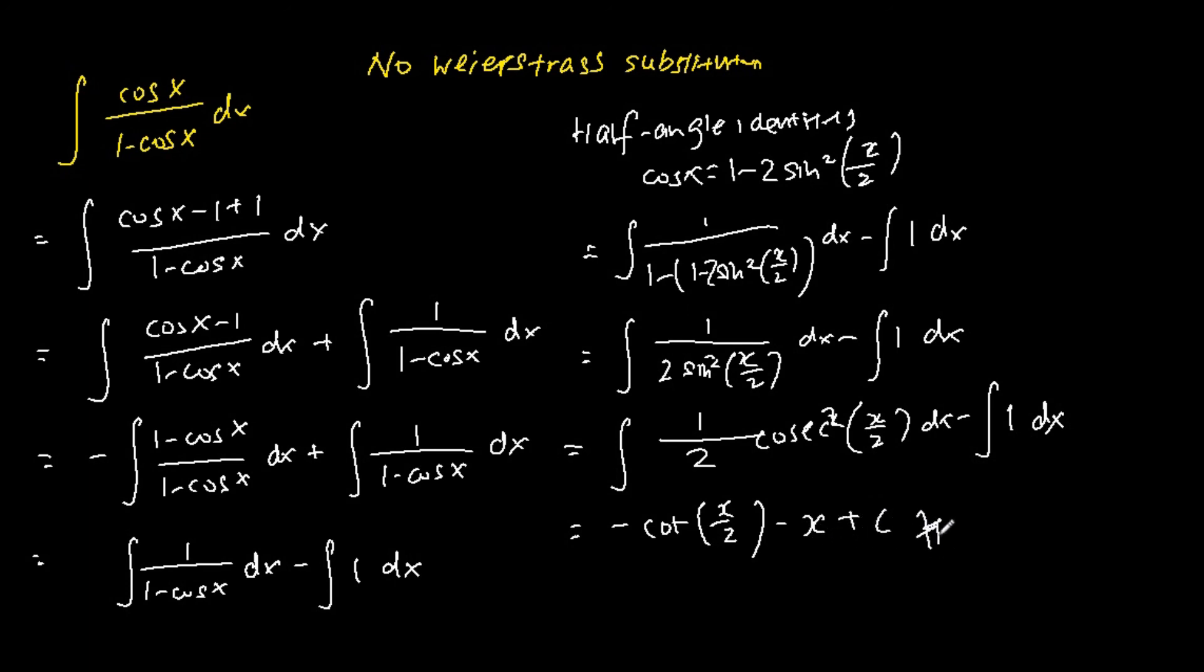And this is the final answer to the integration of cosine x over 1 minus cosine x dx without using the Weierstrass substitution.